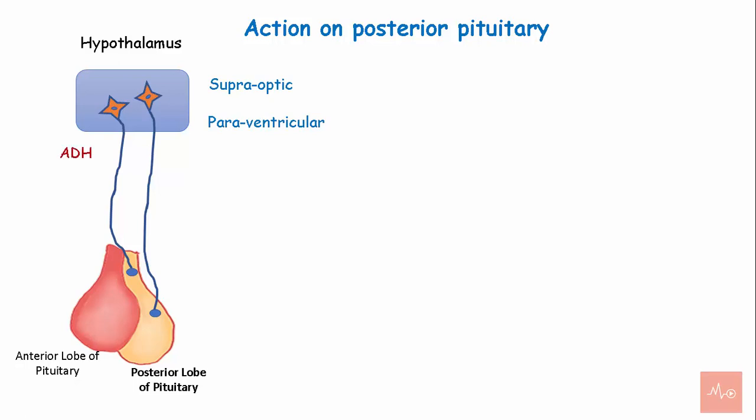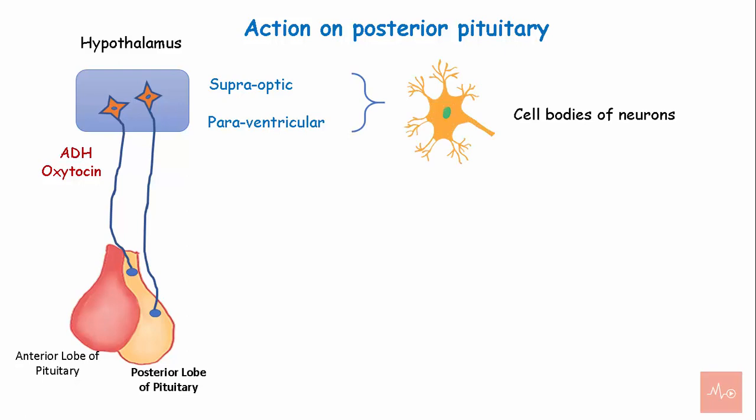The hormones released by the posterior lobe of the pituitary gland are the antidiuretic hormone and oxytocin. These hormones are synthesized by the cell bodies of neurons in the supraoptic and the paraventricular nuclei.